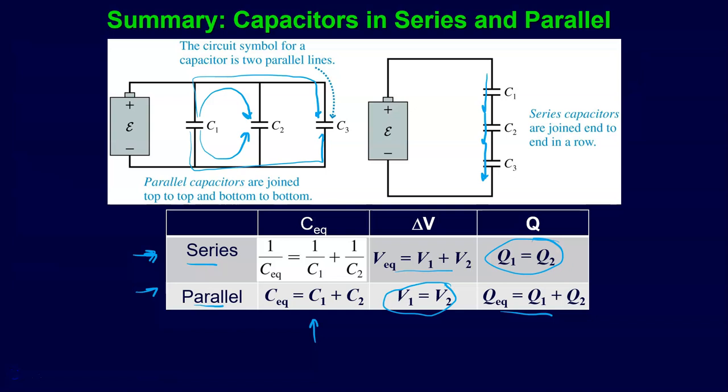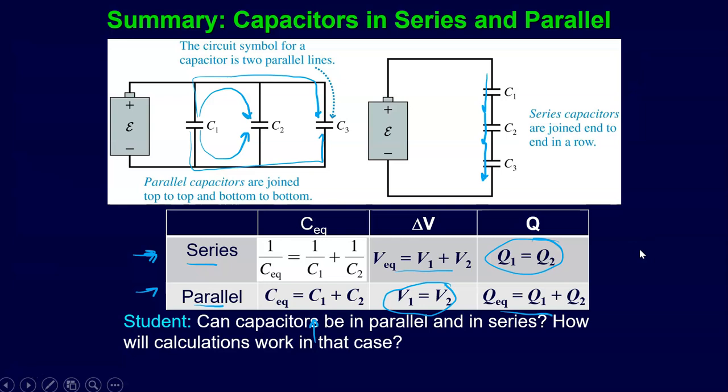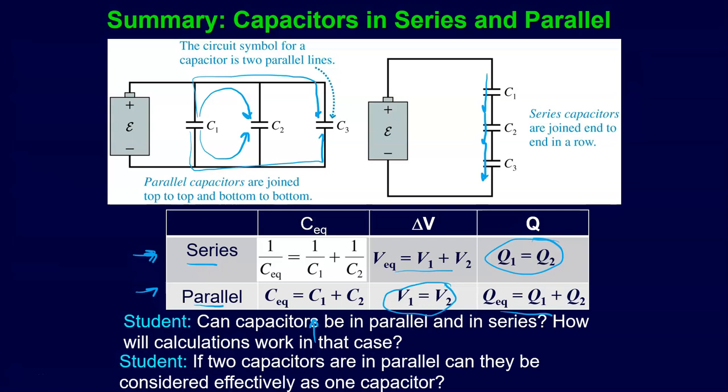A student asks: can capacitors be in both parallel and series? They can't be in both - it's either one or the other. But you will find cases where capacitors aren't in either, and that's the more common case - in that situation you can't combine them. Usually with these problems, there are two that are in parallel or series right away, and you start with those. If two capacitors are in parallel, you can consider them effectively as one capacitor using the equivalent capacitance equations.